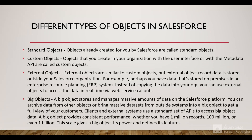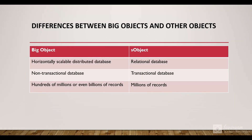Another type is the big object. A big object stores massive amounts of data on the Salesforce platform. The standard audit trail provided by Salesforce is basically a big object where all user history is stored. If we need to store millions and millions of records, standard or custom objects won't suffice — we need a big object. Performance is consistent whether you have 1 million, 100 million, or even 1 billion records, and it scales easily and cheaply.